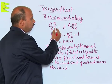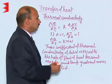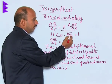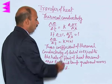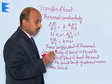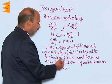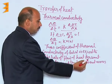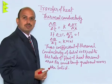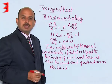We have derived the relation: delta Q upon delta t equals k times A times delta T upon delta x. If you take A equal to 1 and delta T upon delta x equal to 1, then delta Q upon delta t equals k. Thus, the coefficient of thermal conductivity of a solid equals the rate of flow of heat per unit area per unit temperature gradient across the solid.